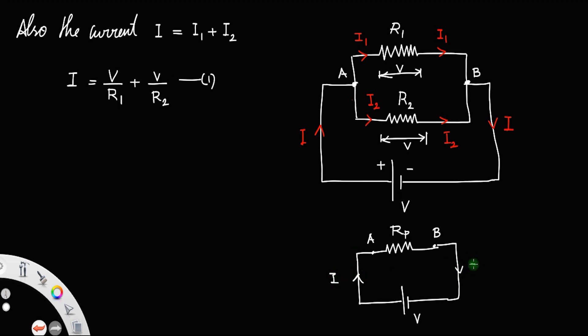Because we are providing the same cell, and instead of R1 and R2, I am taking Rp, but the effect remains the same, so current is also the same. Now, applying Ohm's law here, we have current is equal to voltage V divided by Rp. Let us call that as equation number 2.